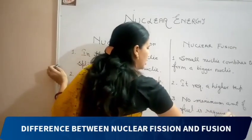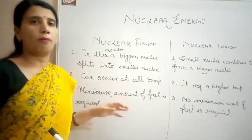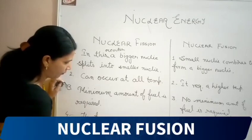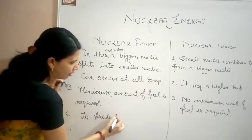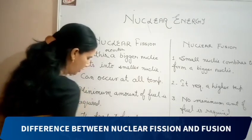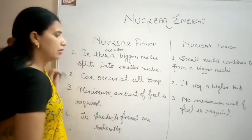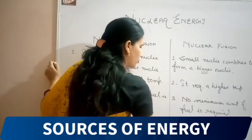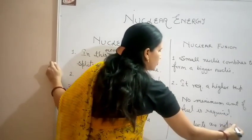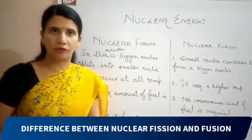In nuclear fission reaction, the products which are formed are mainly radioactive. But in case of nuclear fusion reaction, the products are not radioactive. So these are the four differences between nuclear fission and fusion reaction.